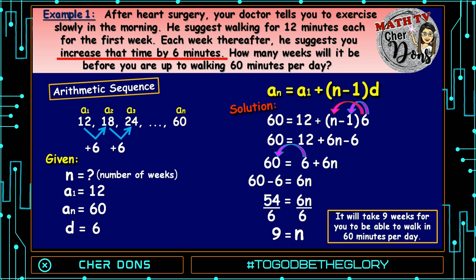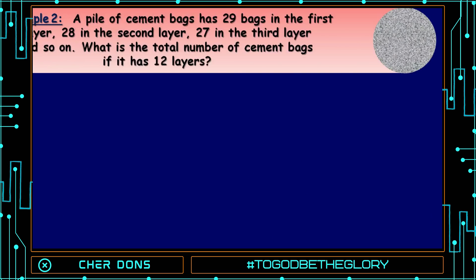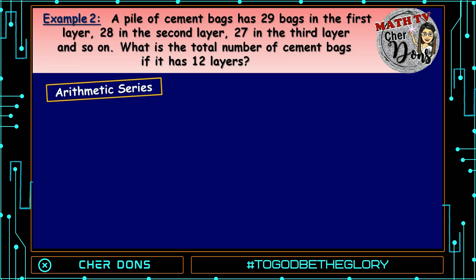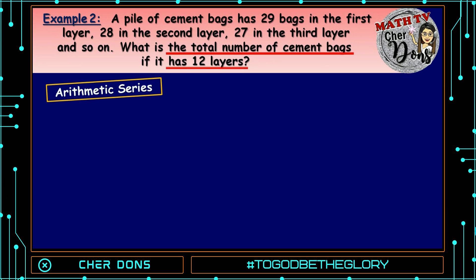Therefore, it will take 9 weeks for you to be able to walk 60 minutes per day. Example number 2: a pile of cement bags has 29 bags in the first layer, 28 in the second layer, and 27 in the third layer, and so on. What is the total number of cement bags if it has 12 layers? This is an arithmetic series, because we're looking for the total number of cement bags.